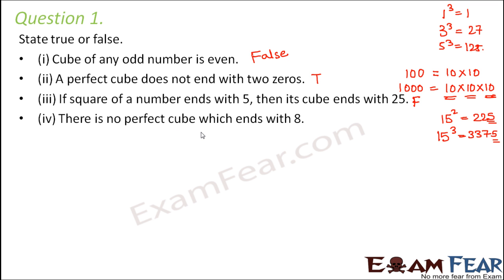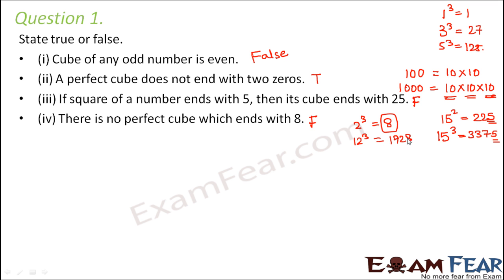There is no perfect cube which ends with 8 — that's again false. If you look at 2 cubed, it is 8, so 8 is a perfect cube. Similarly, 12 cubed is 1728, so 1728 is also a perfect cube. And 42 cubed equals 74088, which also ends in 8. So any number ending with 2 has a perfect cube ending with 8 — perfect cubes can definitely end with 8.